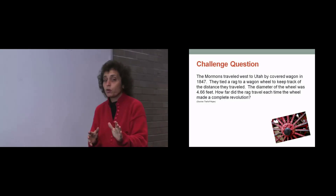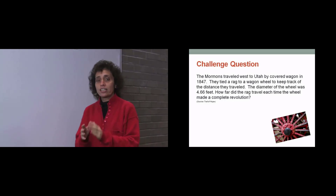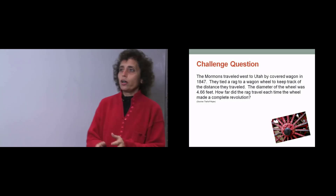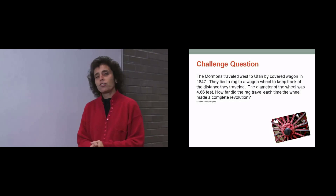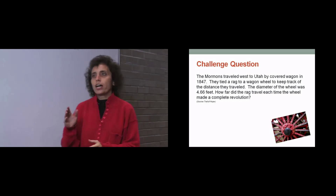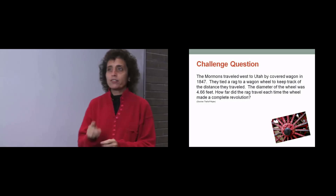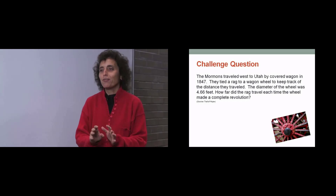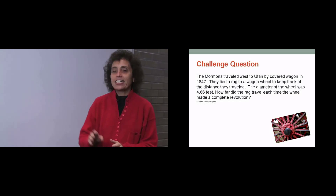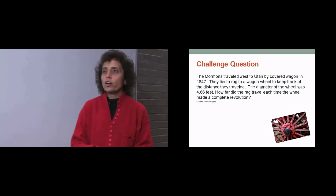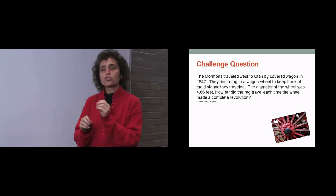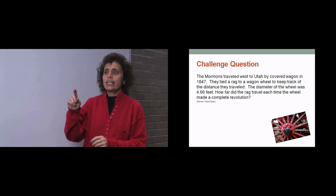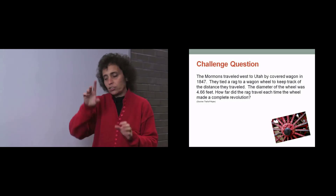I told you we'd be applying a little bit of what we know, so let's take a look at this question. The Mormons traveled to Utah by a covered wagon in 1847. They tied a rag to a wheel to keep track of the distance they traveled. The diameter of the wheel was 4.66 feet. How far did the rag travel each time the wheel made a complete rotation?